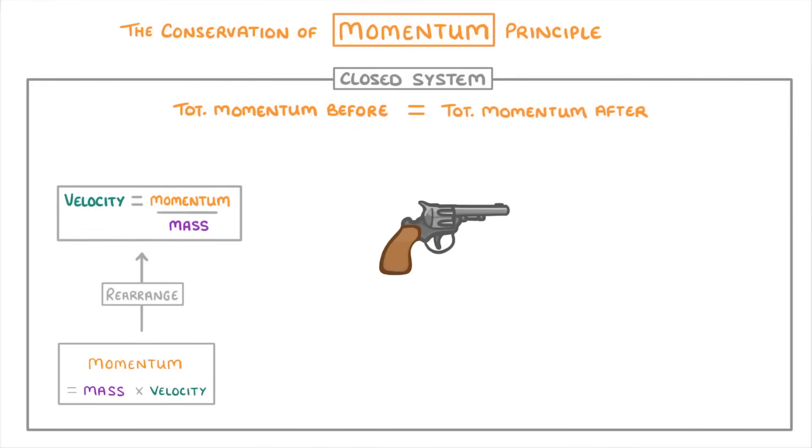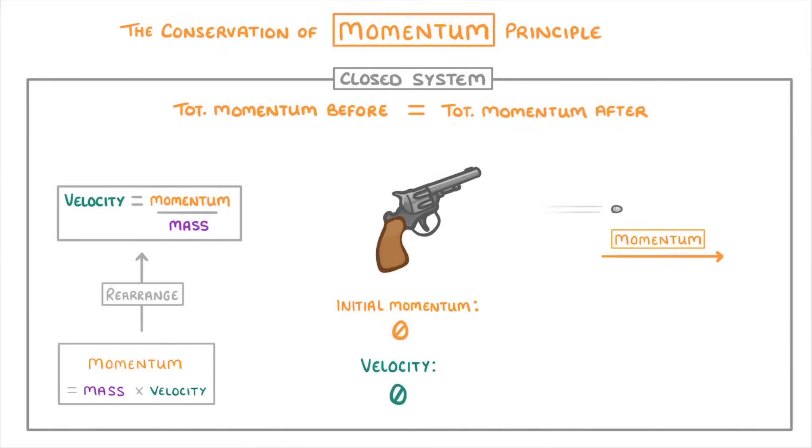For example, if we imagine a gun before it's fired, then its initial momentum would be zero, because its velocity is zero. However, once the gun fires, the bullet that flies out will have a momentum in the forward direction. And so to compensate for this, the gun has to recoil backwards with an equal momentum, so that together, the total momentum is still zero.